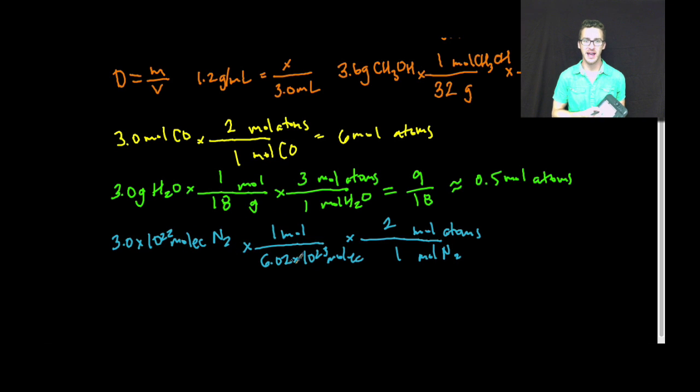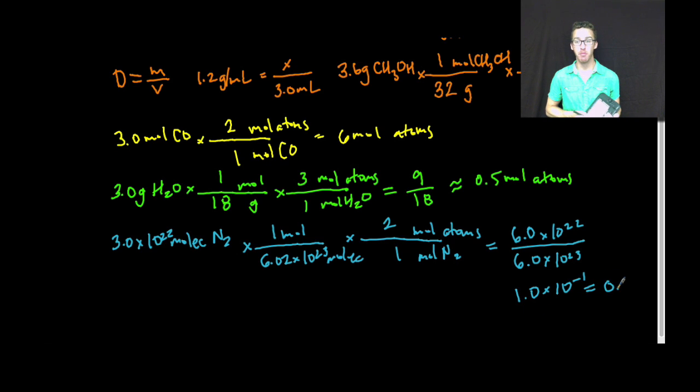All right, so how are we going to do some math when we have numbers in scientific notation? 3.0 times 10 to 22 times one times two, that is going to be 6.0 times 10 to the 22. In the denominator, we're going to have 6.02 times 10 to the 23 times one, which I'm going to say is 6 times 10 to the 23. Now, when you divide two numbers in scientific notation, you divide the coefficients, 6 divided by 6, 1 times 10. What do you do with your exponents? Subtract. 22 minus 23 is 10 to the negative 1. Now, that's also equal to 0.1 moles of atoms.